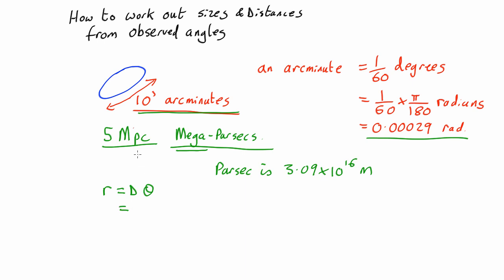So if we plug in 5 megaparsecs for that, and 10 arc minutes for here, and convert everything into the appropriate units, we find that the length R here, the true physical length of this galaxy, comes out at about 14.5 kiloparsecs. A kiloparsec being 10 to the 3 parsecs, which is indeed a feasible size for a galaxy.